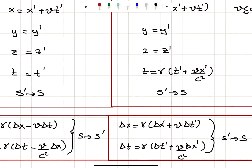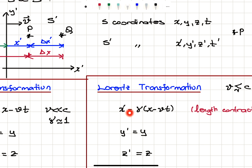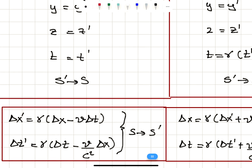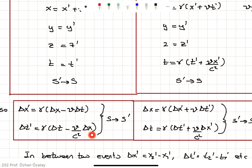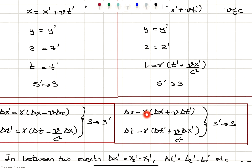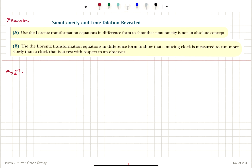Now, for the S to S prime transformation, delta X prime equals gamma times delta X minus V delta T, and delta T prime equals gamma times delta T minus V delta X over C squared. For the transformation from S prime to S: delta X equals gamma times delta X prime plus V delta T prime, and delta T equals gamma times delta T prime plus V delta X prime over C squared. This covers all the Lorentz transformation equations — relativistically corrected Galilean transformation equations.